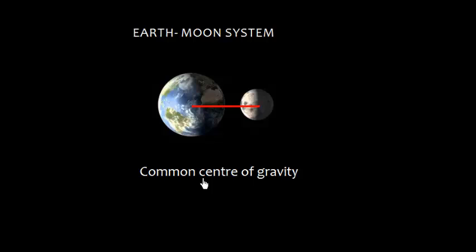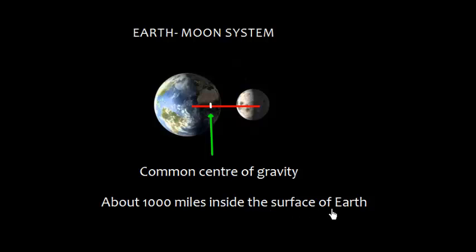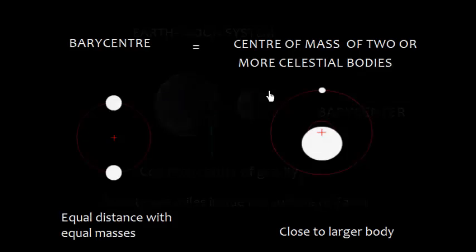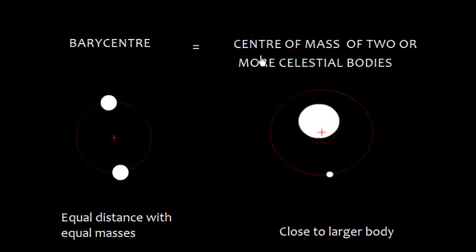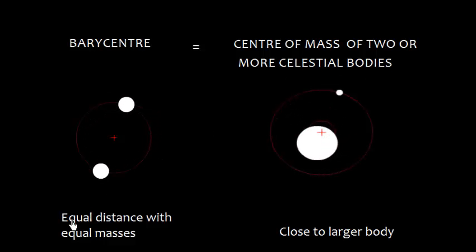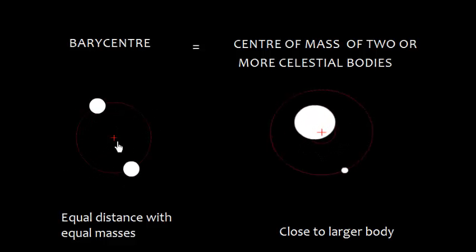This Earth-Moon system has a common center of gravity, which lies about 1,000 miles inside the surface of Earth — more precisely, 1,710 kilometers. The name of this common center of gravity is the Barycenter. The Barycenter is the center of mass of two or more celestial bodies.